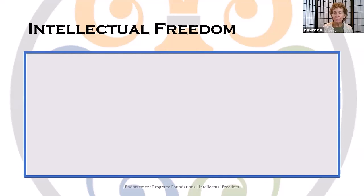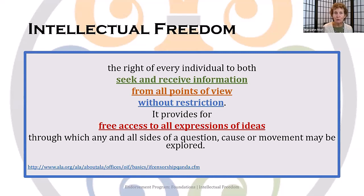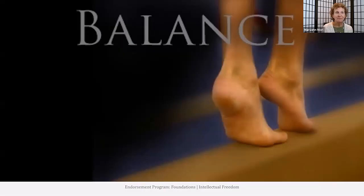Intellectual freedom, as described by the American Library Association — more commonly known as ALA — is the right of every individual to both seek and receive information from all points of view without restriction. It provides for free access to all expressions of ideas through which any and all sides of a question, cause, or movement may be explored. One thing that seems important for librarians to consider is this word: balance. If you had to summarize intellectual freedom in one word, it could be balance.